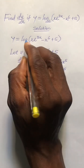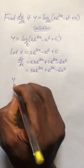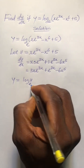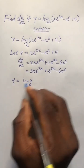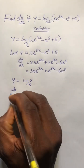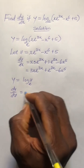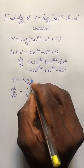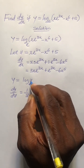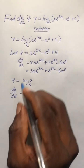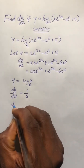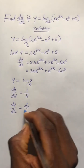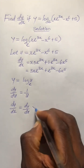Now if we let u be this expression, that means y will be log(u) in base e. So we have y equal to log(u) in base e. Differentiating y with respect to u gives dy/du equal to 1/u. Remember that u can be any letter — it can be x or theta. The next step is to apply the chain rule: dy/dx equals dy/du times du/dx.